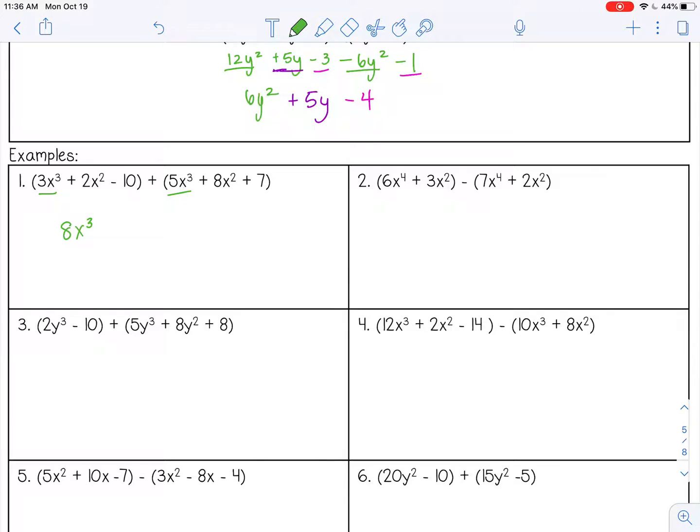And then I have 2x squared plus 8x squared. That's 10x squared. If you want to draw different shapes around it, you can. If you want to use different colors, you can. Whatever helps you make sure that you know which terms are like.